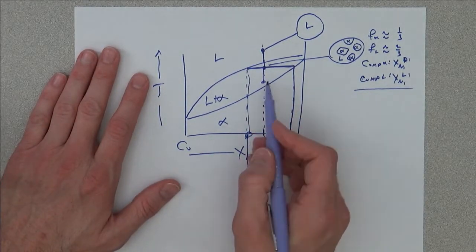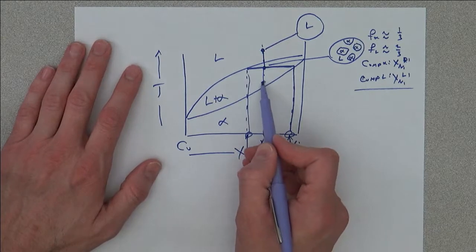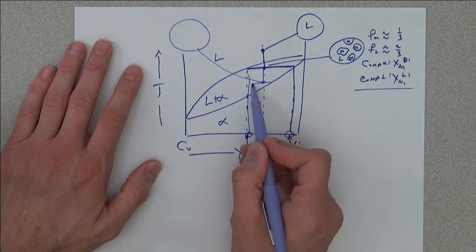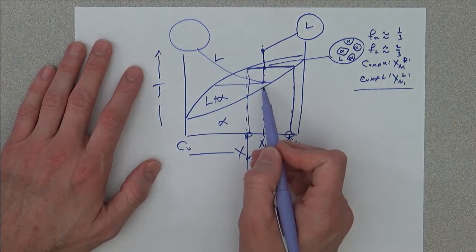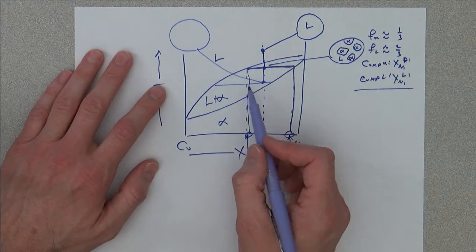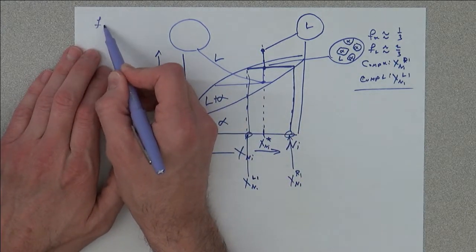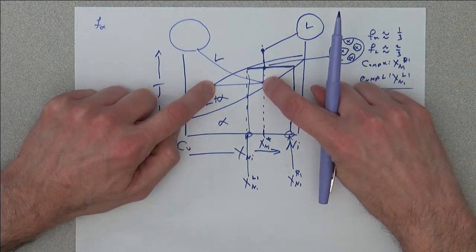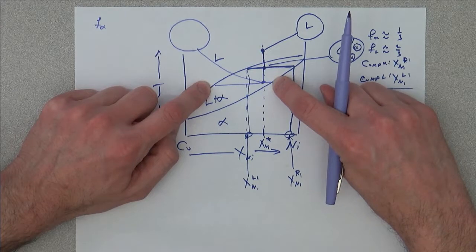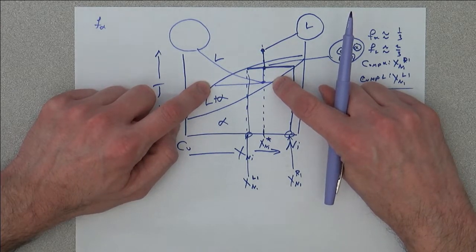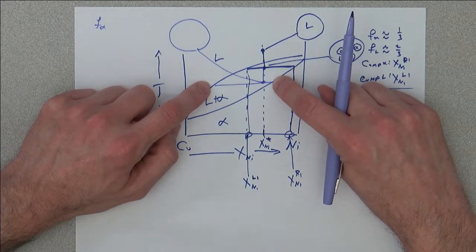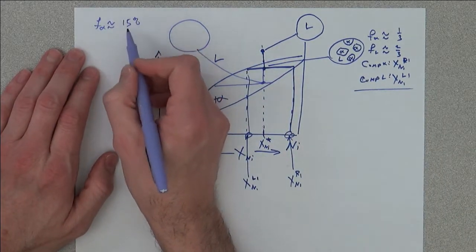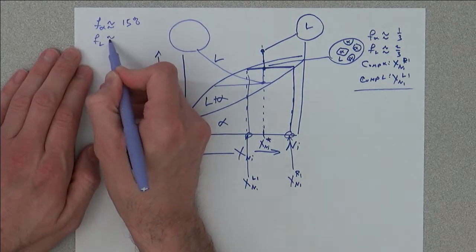I'm going to change colors and we can talk about cooling down further to that point. The fraction of alpha is going to be the lever away from the alpha divided by the total lever length, and that looks like maybe 10 to 15 percent.